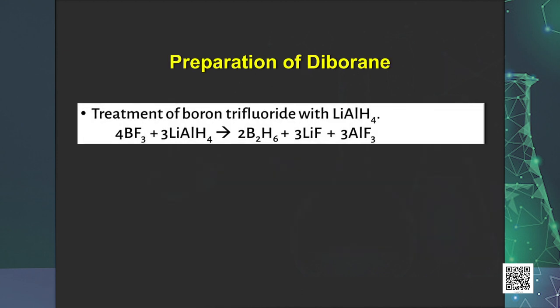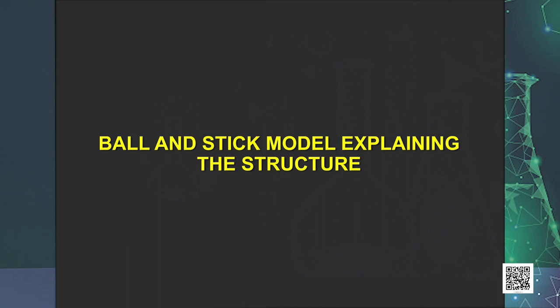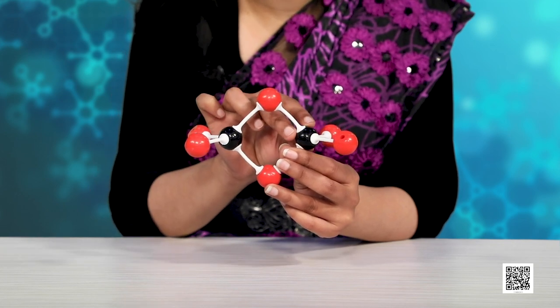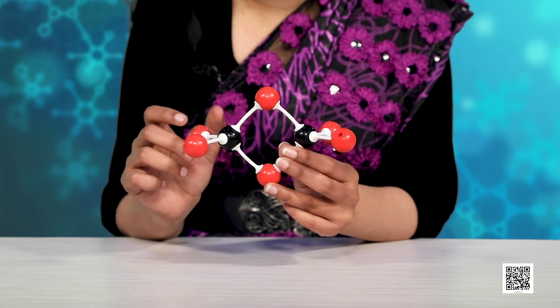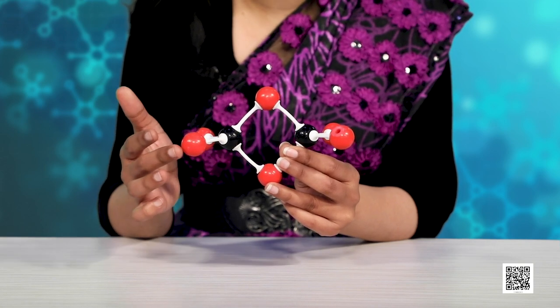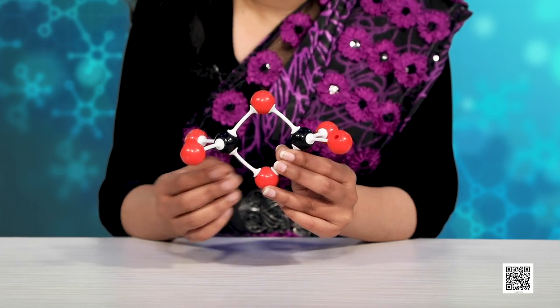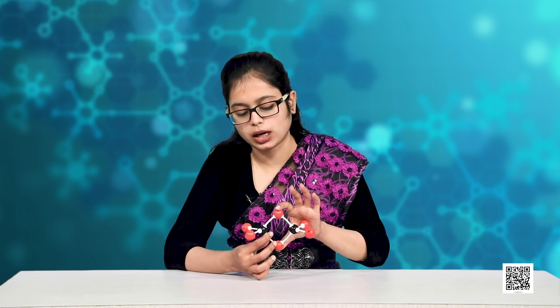Preparation of diborane involves treatment of boron trifluoride with lithium aluminium hydride in diethyl ether. In the ball-and-stick model of diborane, the black spherical ball represents the boron atom and the red spherical balls represent hydrogen atoms. The four terminal hydrogen atoms and the two boron atoms lie in one plane. Above and below this plane there are two bridging hydrogen atoms — these two are the bridging atoms.